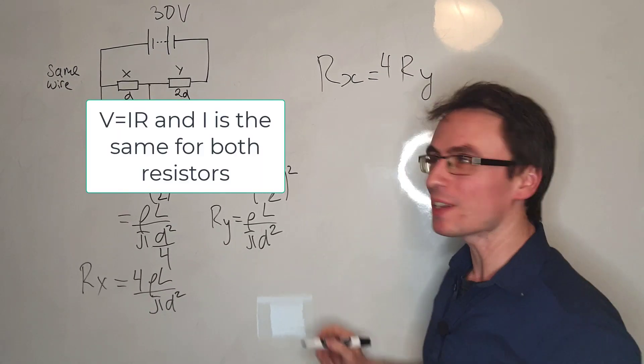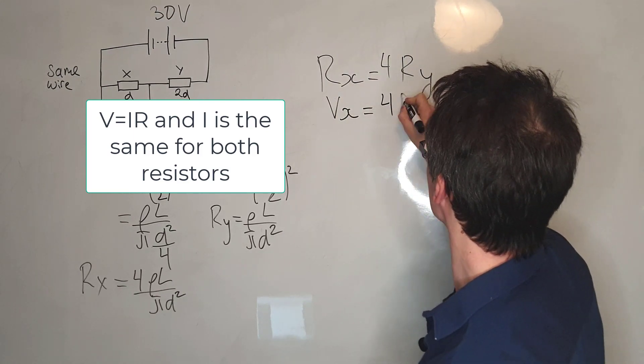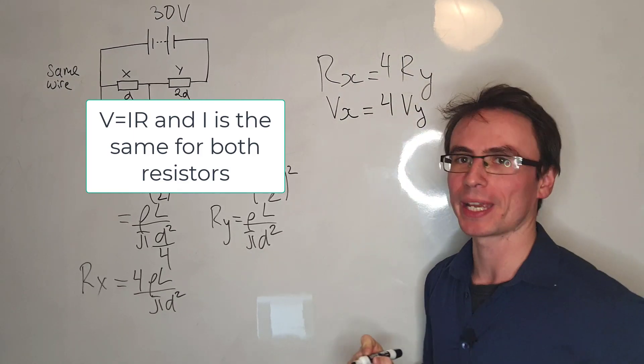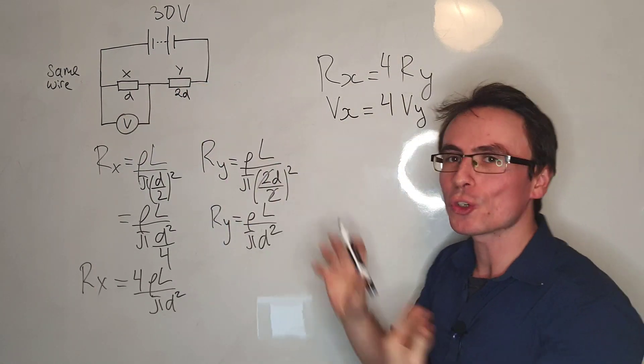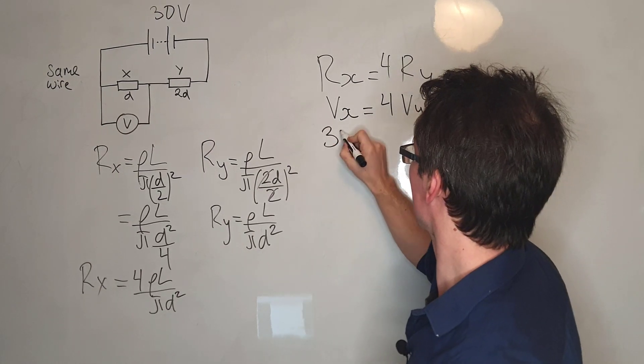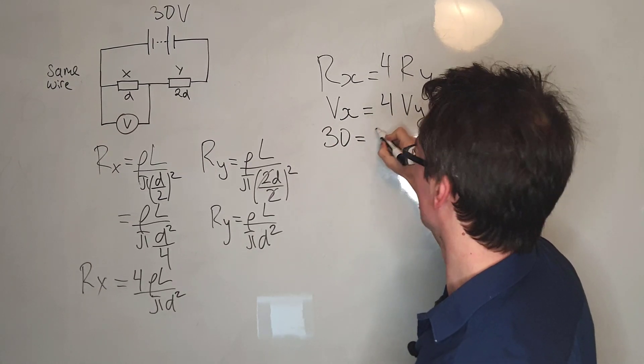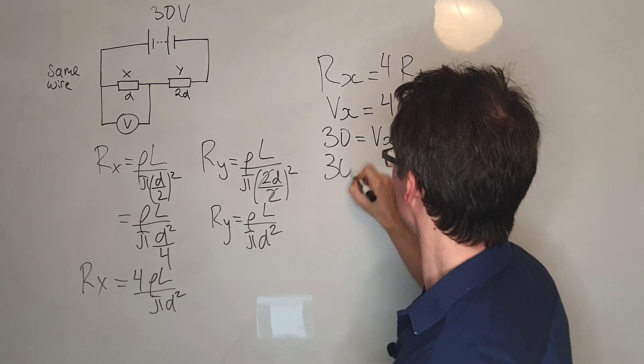And because of this, we can write that Vx will be equal to 4 times Vy. Well, the voltage of X plus the voltage of Y should add up to 30 volts by Kirchhoff's second law. We can just say that 30 will be equal to Vx plus Vy.